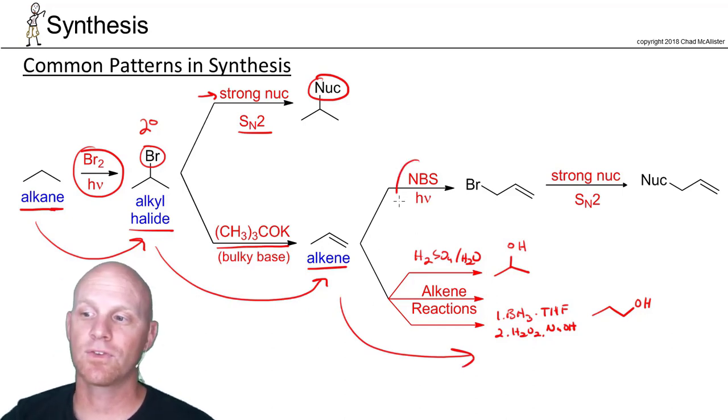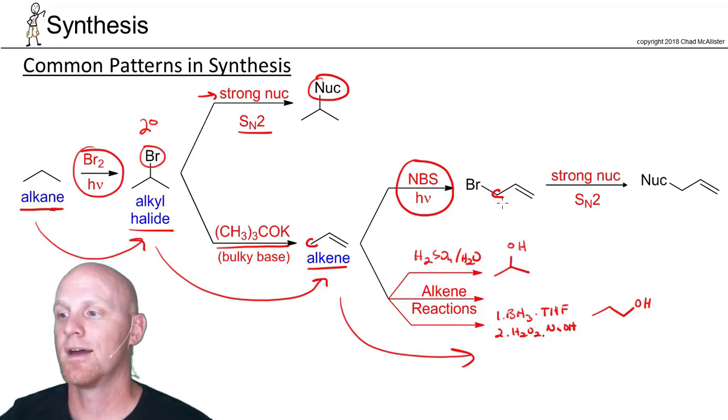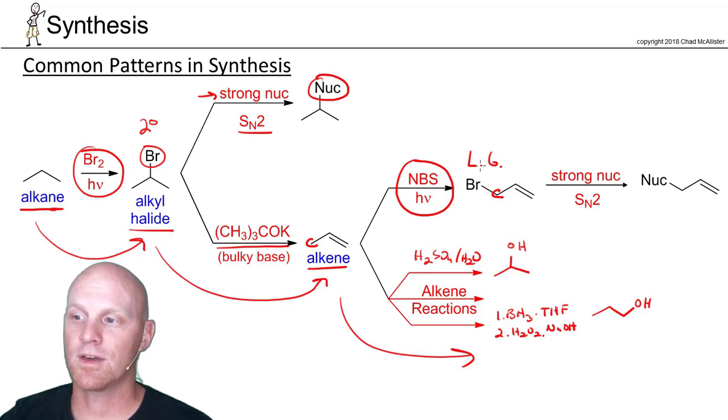If you form an alkene, you could potentially brominate on that allylic carbon by using NBS, bromosuccinimide. Now that you've got another good leaving group in the bromine there, being allylic, it's also activated for SN2.